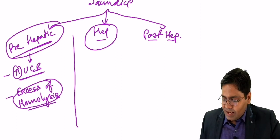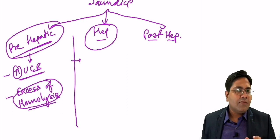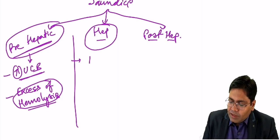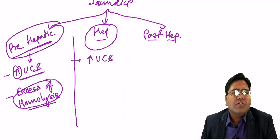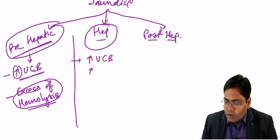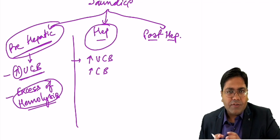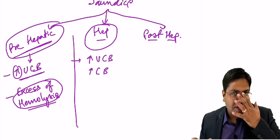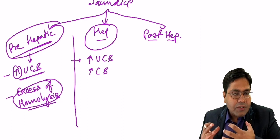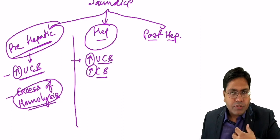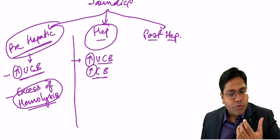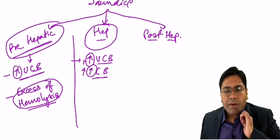In hepatic jaundice, there is a pathology in the liver. This pathology will lead to increase in unconjugated bilirubin because the uptake of unconjugated bilirubin will be decreased. There will also be an increase in conjugated bilirubin because when there is inflammation in the liver, the hepatocyte becomes leaky and leaks out the conjugated bilirubin formed inside. So both unconjugated and conjugated bilirubin will be raised in hepatic jaundice.